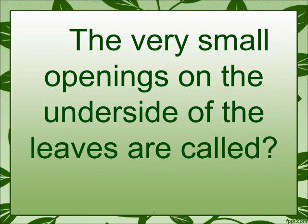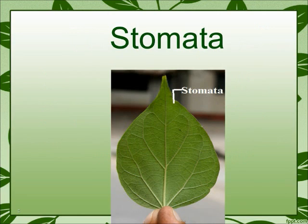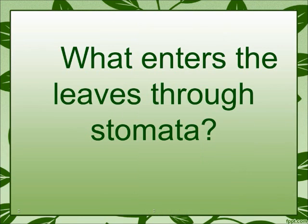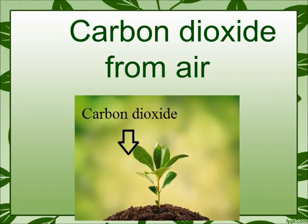The very small openings on the underside of the leaves are called? Stomata. What enters the leaves through stomata? Carbon dioxide from air.